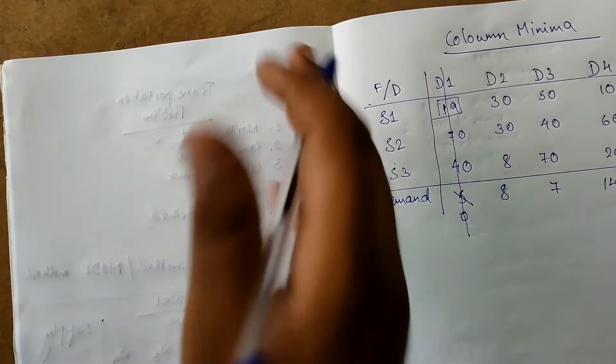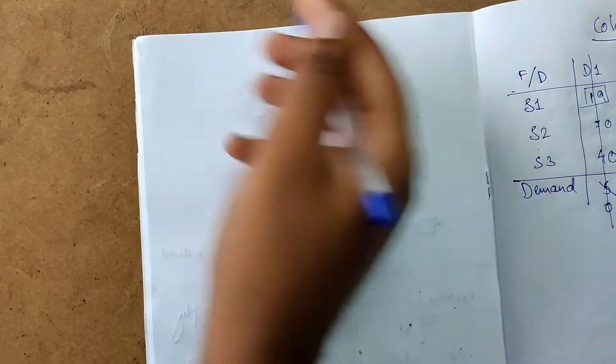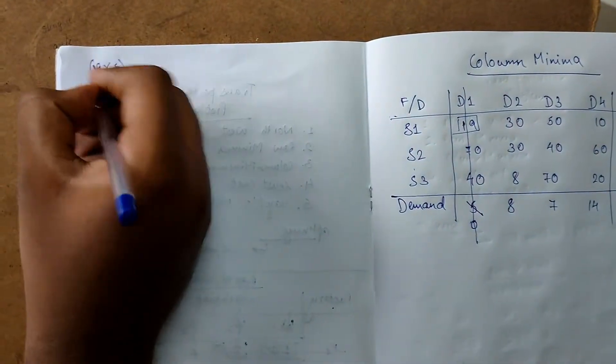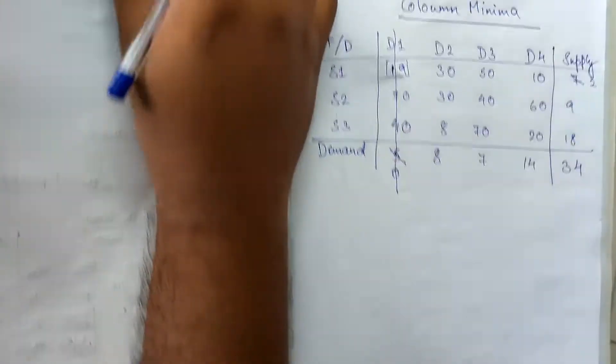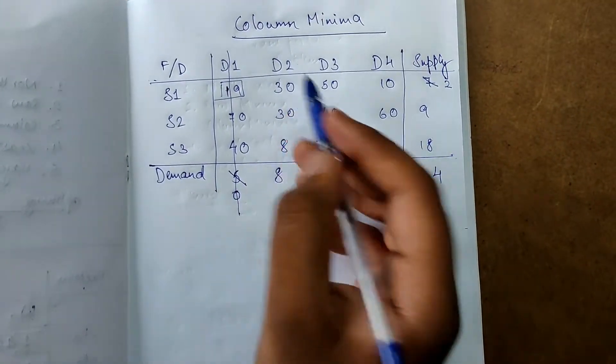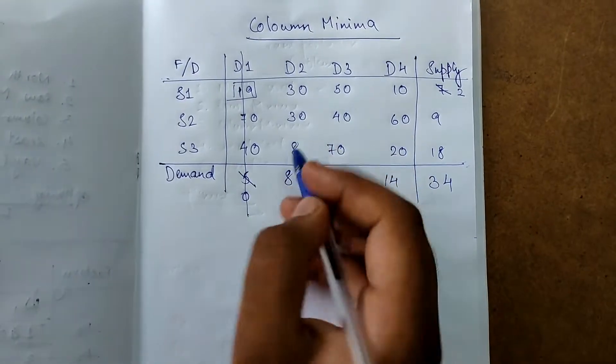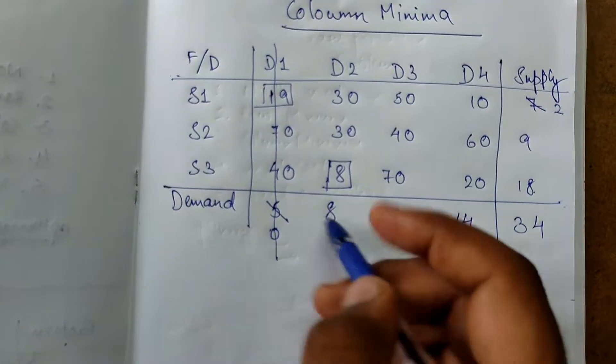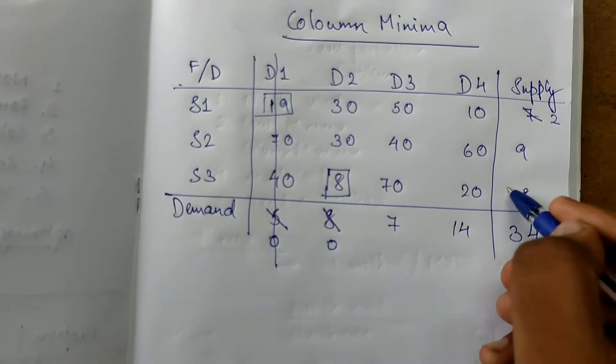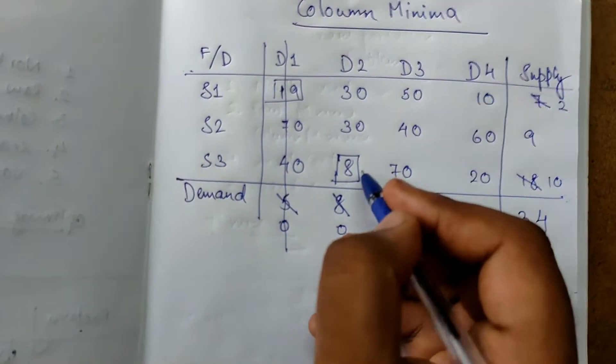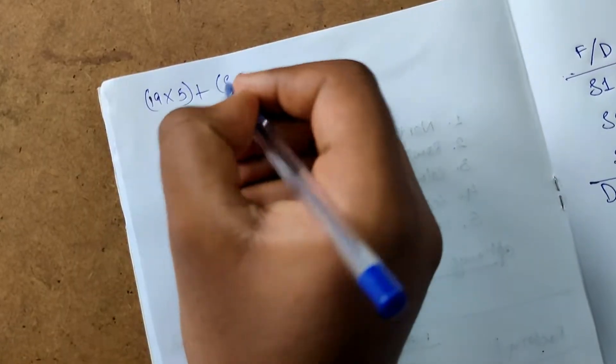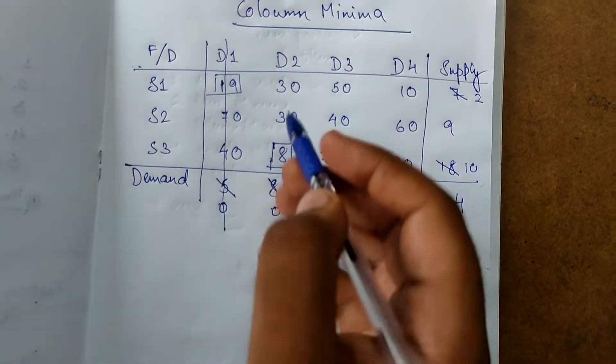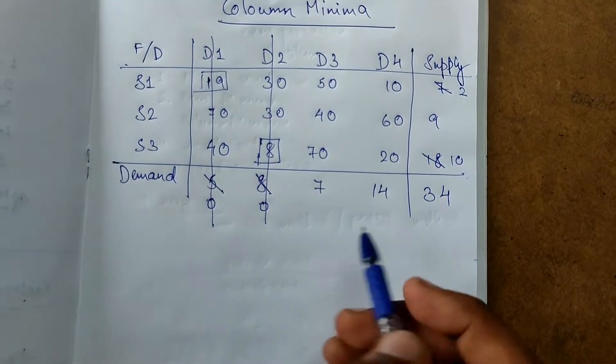Next column iteration, next column iteration to D2. In D2, 8 is the minimum. 8, demand and supply are 8 and 18. Which is the least? 8 is the least. 8 minus 8 is 0 and 18 minus 8 is 10. Here we will multiply 8, so 8 into 8. And 0 is here, so attraction will be this side and this column we strike off.